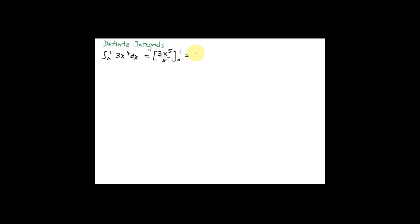Instead, you put the bounds 0 and 1. Substitute 1 into the equation: 3 times 1⁵ over 5, then minus substitute 0 into the equation: 3 multiplied by 0⁵ over 5. This equals 3 over 5. Remember, for definite integrals, substitute the upper bound minus the lower bound.